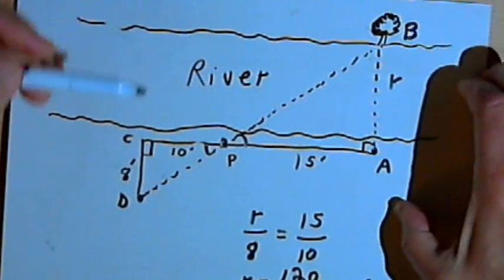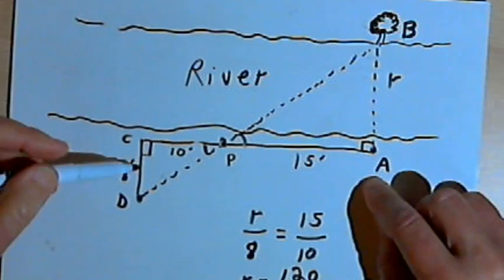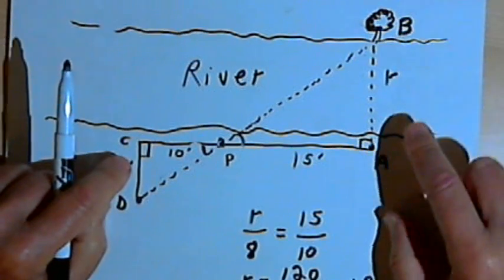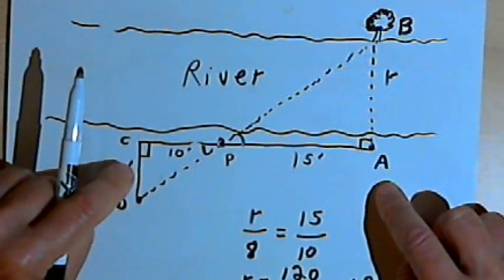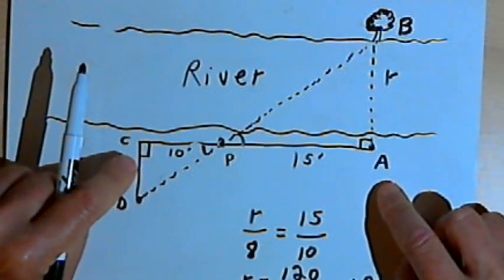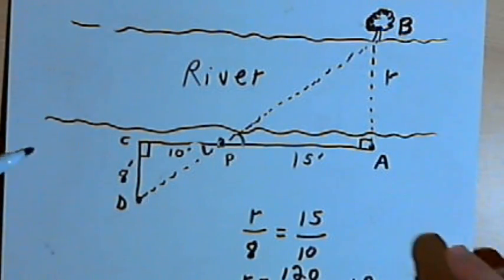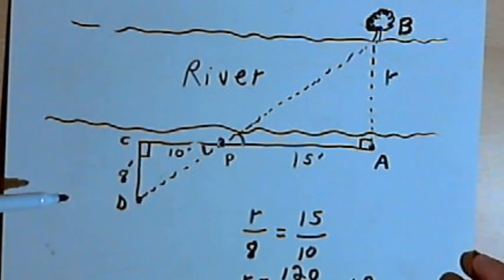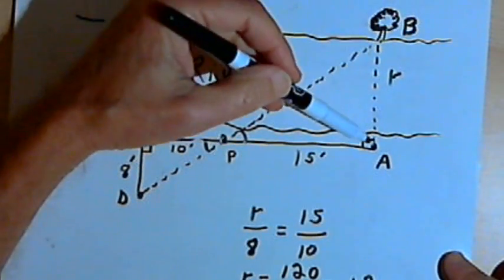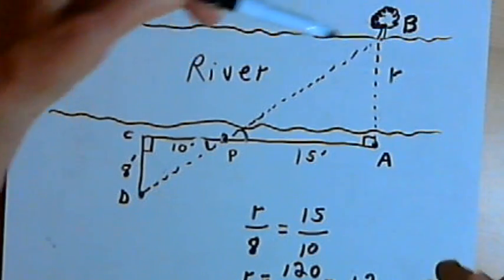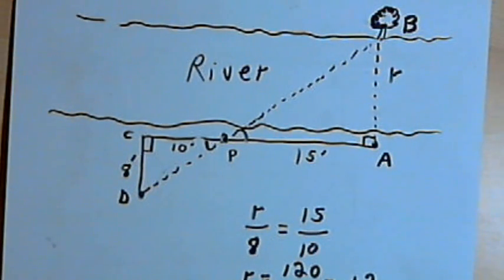Again, we did this by finding a pair of similar triangles — we found they were similar by angle-angle similarity, and then used the similarity to find the unknown side. Hope that helps. Take care, I'll see you next time.